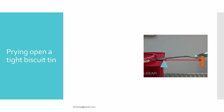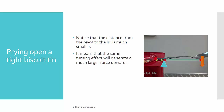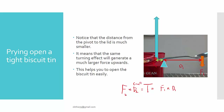But why is that so? The distance from the pivot to the lid is actually much smaller. That means for the same turning effect generated by your applied force — force one times distance one — since the distance at the lid side is much smaller, the same turning effect generates a much larger upward force. This larger force helps you pry open the biscuit tin more easily.